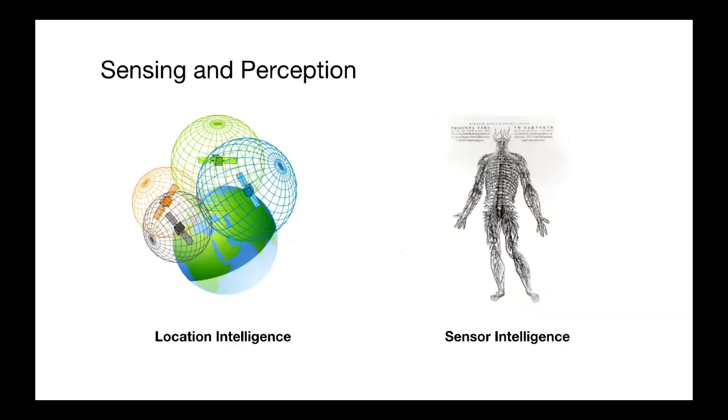We have two broad sub teams. The first is location intelligence, which is heavy on signal processing and works primarily on fundamental positioning estimates for agents on the platform. The second is sensor intelligence, which is a little bit more traditional machine learning. We're actually looking to understand who's on our platform, how they're interacting, things like that.